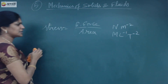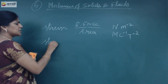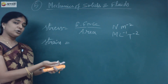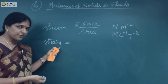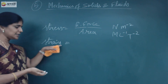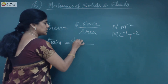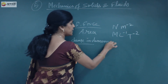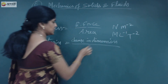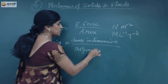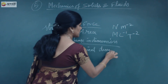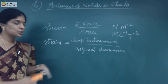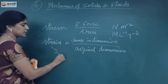Now, stress and strain. If you change the force applied to an object, the dimension of the object changes. Strain is nothing but the ratio between the change in dimension to the original dimension. Since it is a ratio between two similar quantities, strain has no unit.